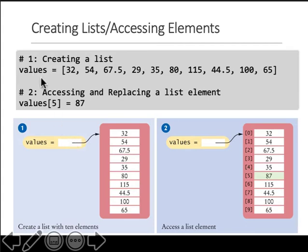Graphically, values is this list which is stored something like this in the memory. And when you say list[5] = 87, this is what happens. So the fifth index, which was 80, gets replaced by 87.